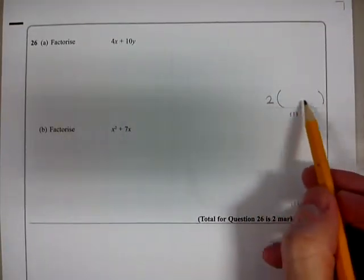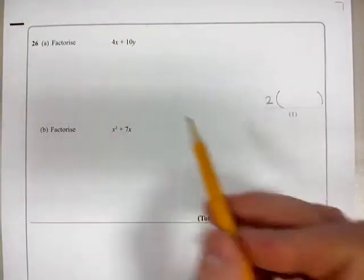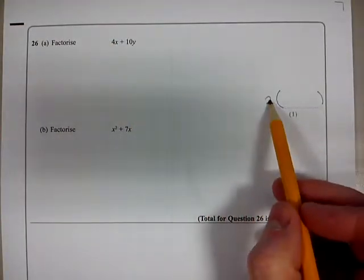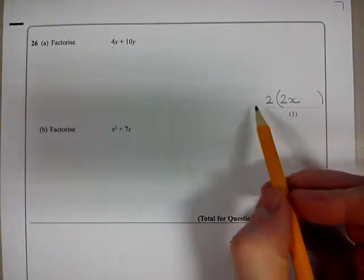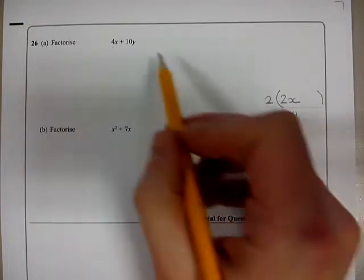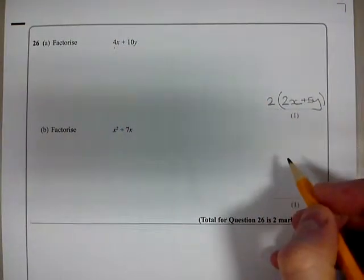Then we have to work out what terms go inside so that if we were to expand the brackets we would get back to here. So what do you multiply by 2 to get 4x? That's 2x. And what do you multiply by 2 to get 10y? That's 5y.